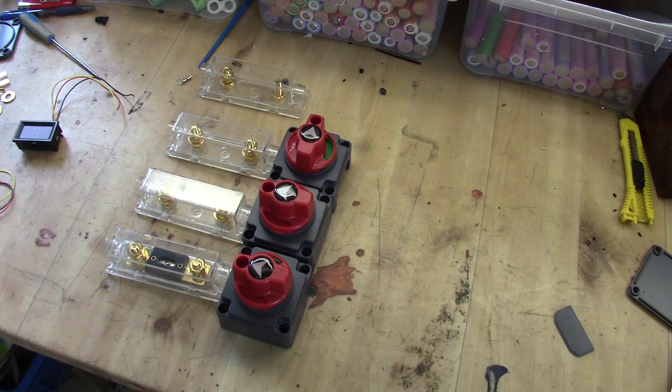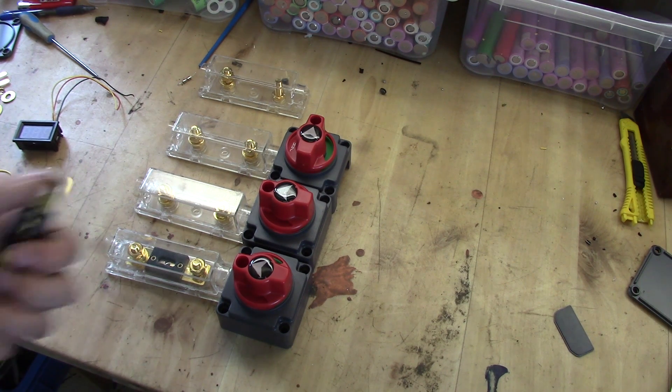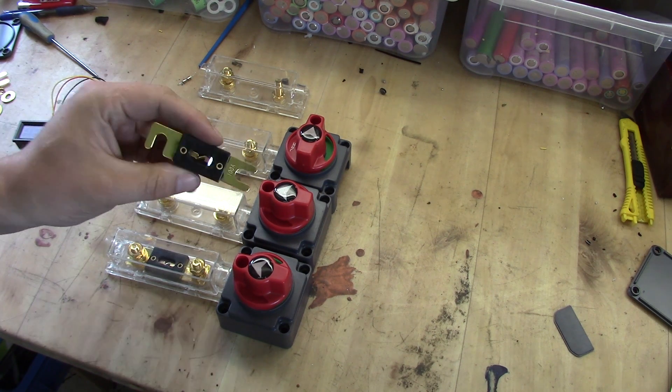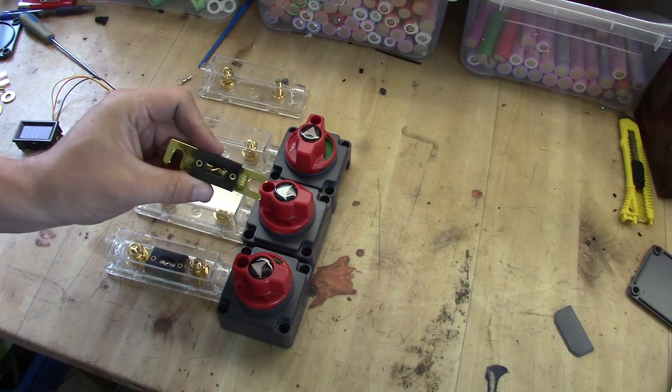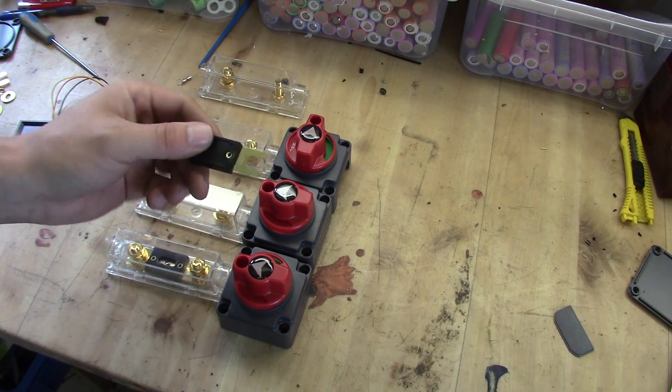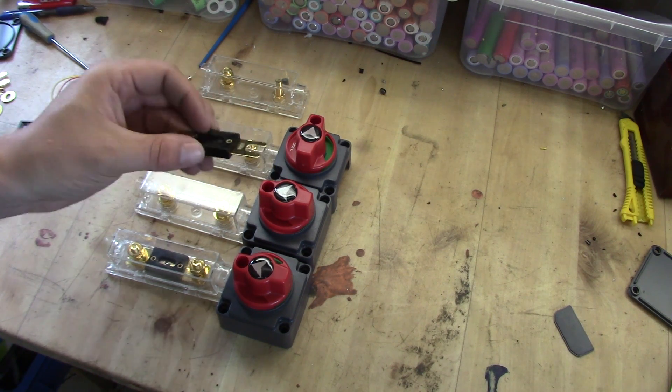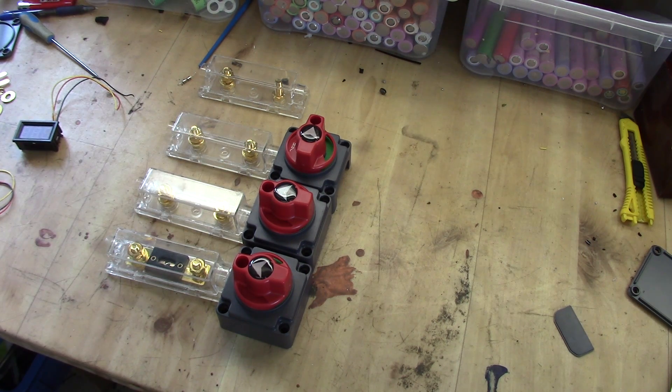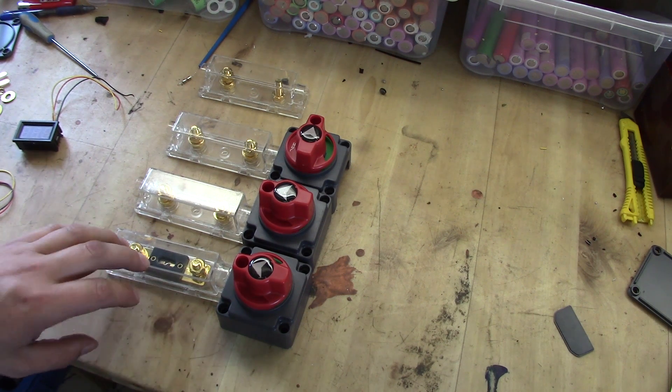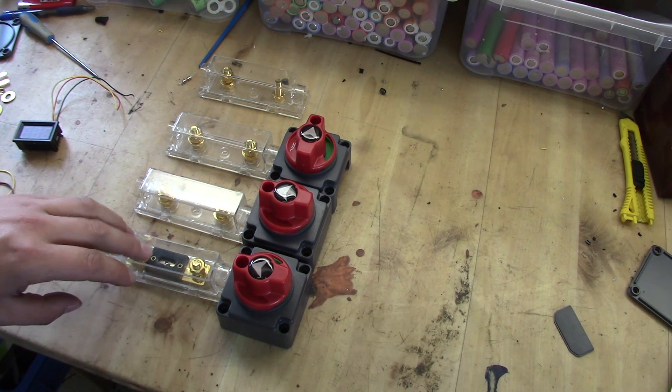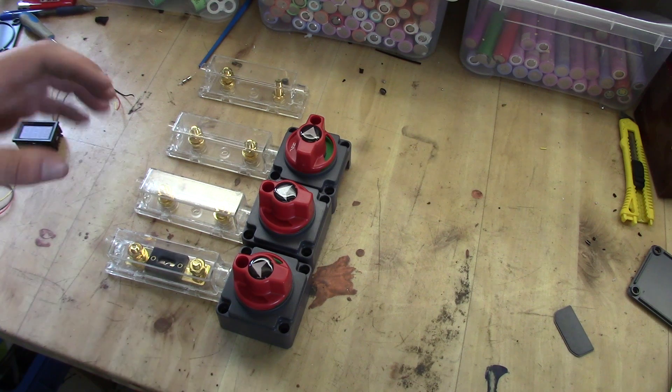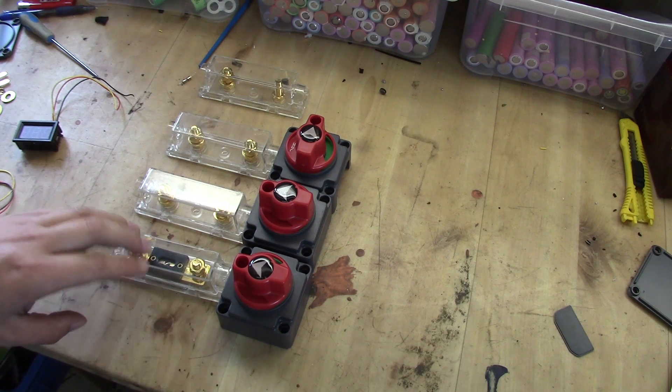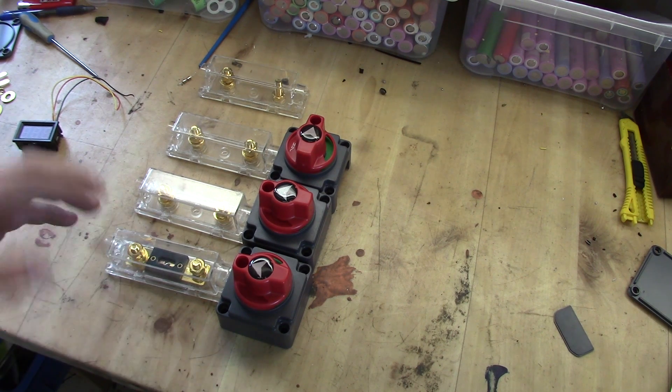When you choose the ANL fuses you should be aware that they exist in two different types. One of them is rated up to 32 volt DC and the other one is up to 80 volt DC. I'm going for the 80 volt DC ANL fuses. ANL compared to ANN that looks the same - the difference is that ANL is a little bit more slow blowing fuse and that's what I want in my scenario where I want to be able to overpower it just for a short while.